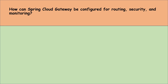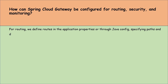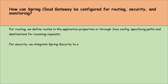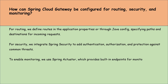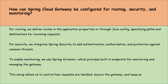How can Spring Cloud Gateway be configured for routing, security and monitoring? For routing, we define routes in the application properties or through Java config, specifying paths and destinations for incoming requests. For security, we integrate Spring Security to add authentication, authorization and protection against common threats. To enable monitoring, we use Spring Actuator, which provides built-in endpoints for monitoring and managing the gateway. This setup allows us to control how requests are handled, secure the gateway and keep an eye on its performance and health, all within the Spring ecosystem.